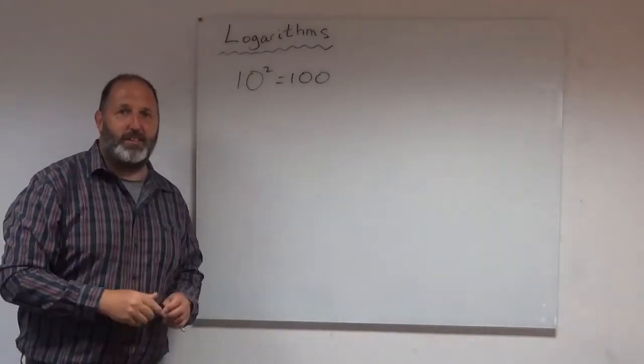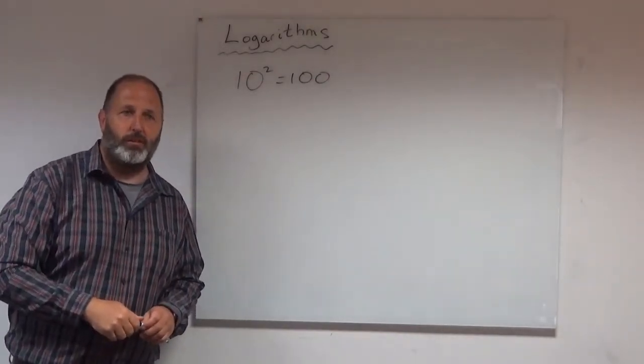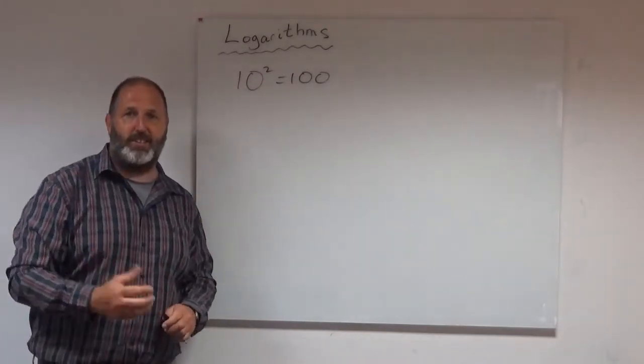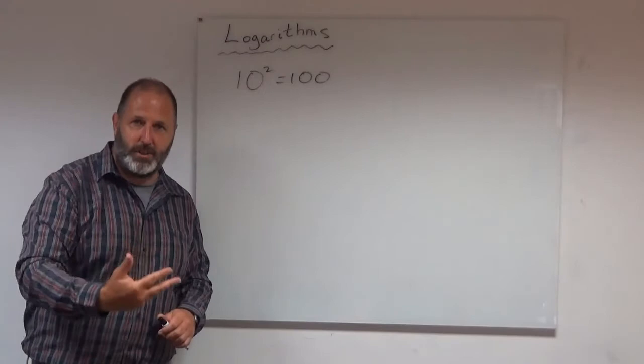I'm going to start off with 10 squared equals 100. Now, what have we got here? The shorthand notation, the power, the indices. That's just shorthand, isn't it? So it's 10 times 10.